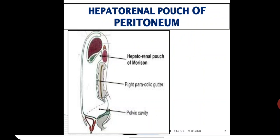Looking at the pouch, you can understand the boundaries. In front is the inferior surface of the right lobe of the liver. Behind is the anterior surface of the right kidney, a part of the right suprarenal gland, and also the right colic flexure, which is shown below the right kidney. Above is the reflection — the inferior layer of the coronary ligament.